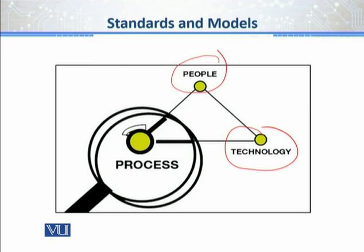The missing part here is: what binds them together? What is the point of achieving quality? And that point is the processes. Process is the first step to ensure or to achieve the quality management system. QMS is an umbrella activity, and the pillar of that umbrella activity is the process. This diagram basically shows that people and technology are actually bound together with the help of processes.